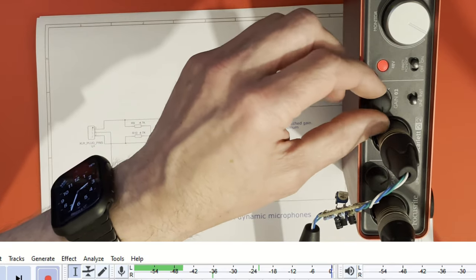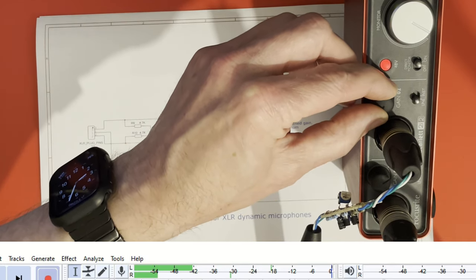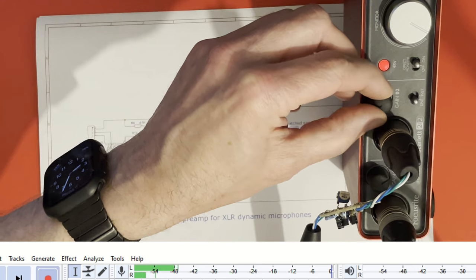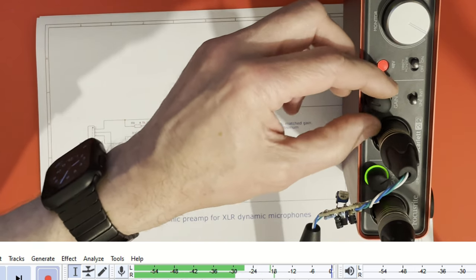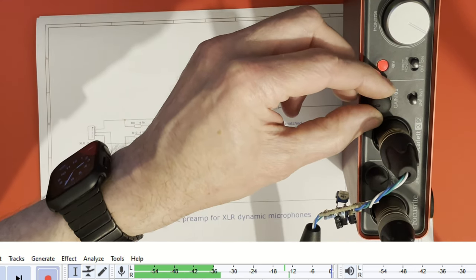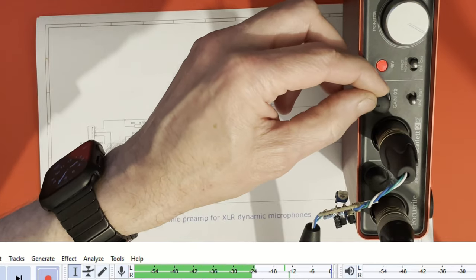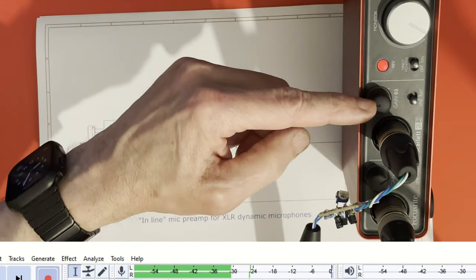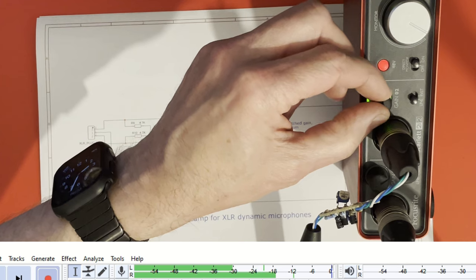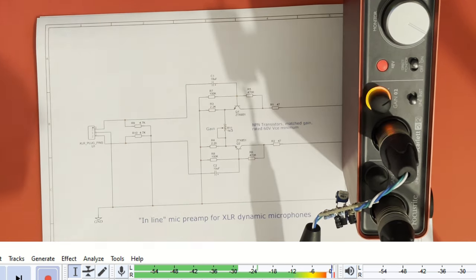Right, that's now all the way up, maximum gain. And if I bring this back up, so that's now about equal to SM58 at half gain on this interface, and if I turn it full up, well I'll have to back off a bit because it's going to overload like crazy.